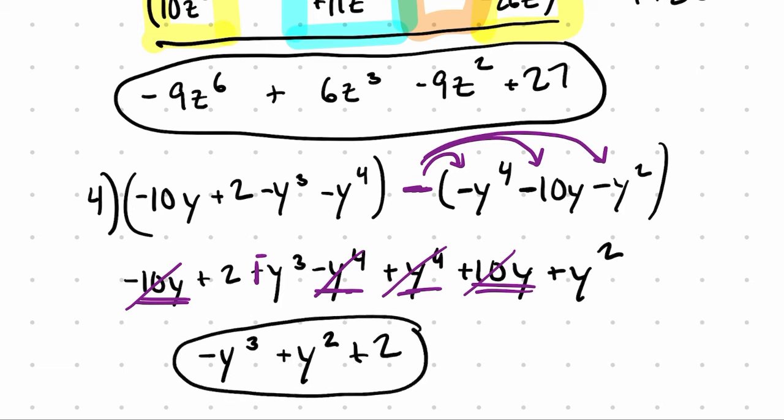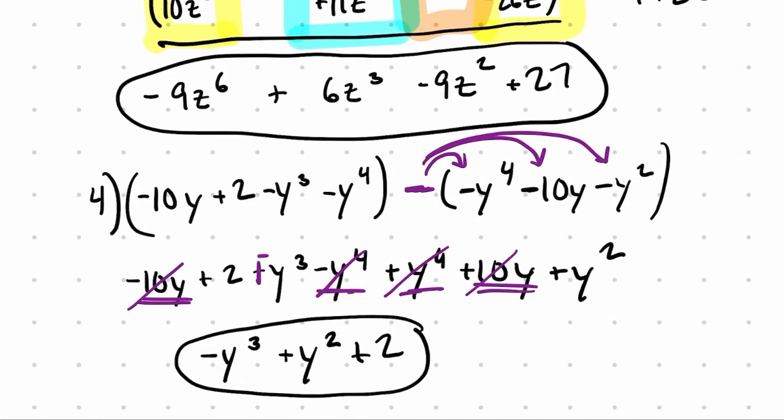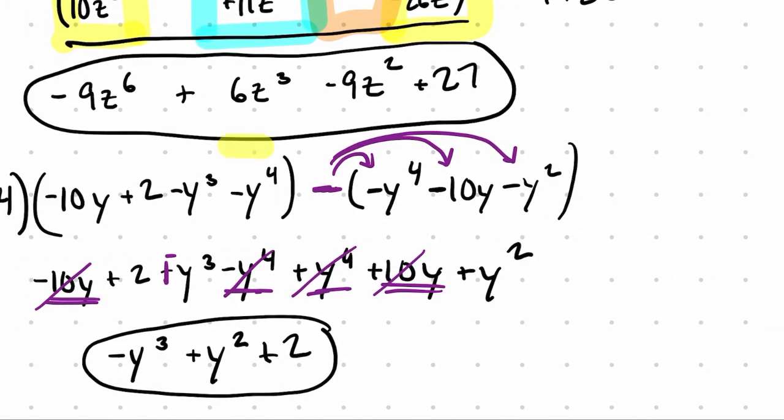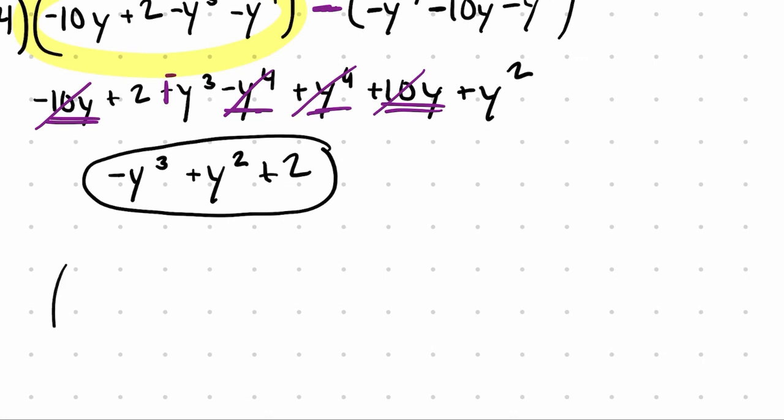One thing I would say about these problems that I don't see popping up is you might have something in here that needs to be simplified even before you start. Let's scan ahead and look at the other problems. I don't see it yet, but I'll show you an example right here. Let's say you had 10x plus 12x squared. And then minus x plus x squared minus 5x.